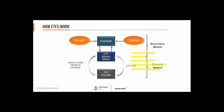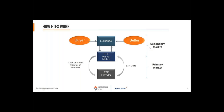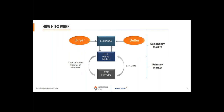Here's how mutual funds work: buyers can buy directly from the fund company and the fund company goes to the stock exchange to buy the underlying securities on behalf of the mutual fund. The buyer gets that at the end-of-day value. ETFs have a much more complex system — buyers and sellers deal directly with the exchange instead of the fund company, buying on the secondary market like a stock.